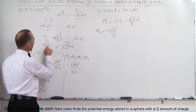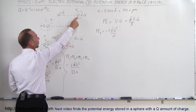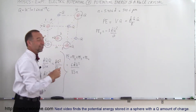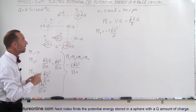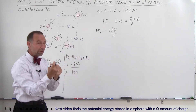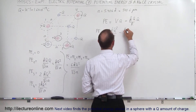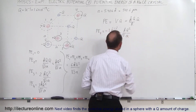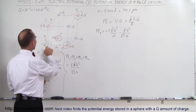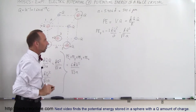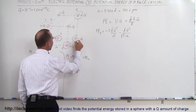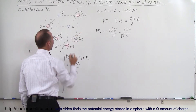Then there's an interaction between this charge and the one at the other side of the cube, which is diagonally across the entire cube. The distance there would be the square root of 3 times A, and that would also be a force of attraction, so we have a minus KQ squared divided by the square root of 3 times A for the interaction between this charge and the fourth positive charge. All right, now we're ready to bring in another charge.